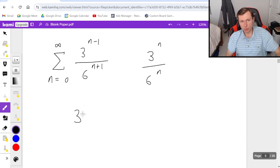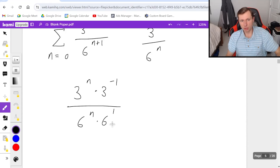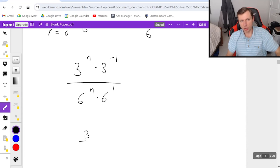In other words, three to the n times three to the negative one properties of exponents divided by six to the n times six to the first. And what this is going to look like is three over six, all to the n, I grouped them together because they have the same exponent now, and then times three to the negative one over six.